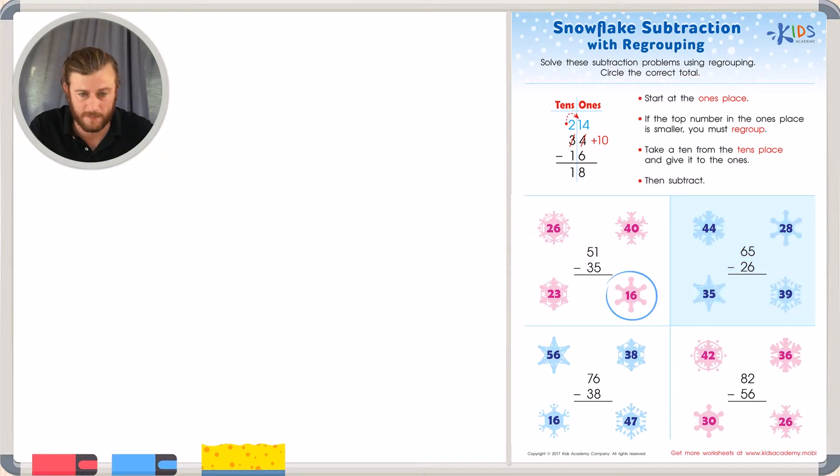Let's look at our second problem. We're going to use the same strategy. 65 minus 26. Again, we'll look at the ones place. In the ones place, we have 5 and 6. The 5 is smaller than 6. So we're going to have to borrow, but we're not going to give it back, a 10 from the 6 which really represents 60. So when we take 1 away from 6, we turn it into 5 which now represents 50. We're going to add 10 to 5 which will now become 15.